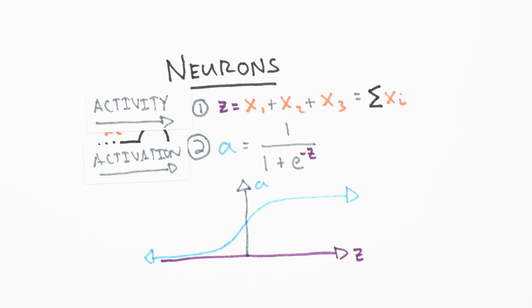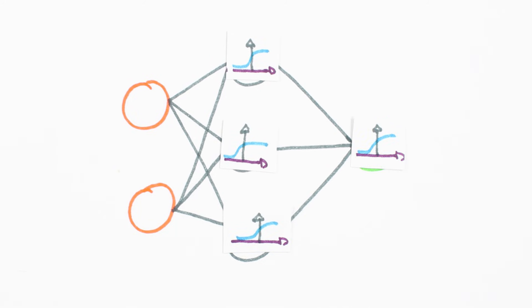For our neural net, we'll use sigmoid activation functions. Next, we'll build out our neural net in Python.